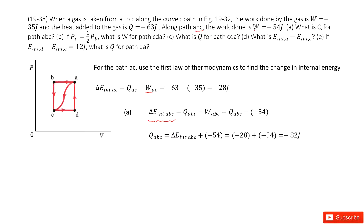And W_ABC is the work done along A-B-C, which is given. So we input it inside as negative 54. Now it looks like if we want to find the heat Q_ABC, we need to know the internal energy change along A-B-C. Can you find it?